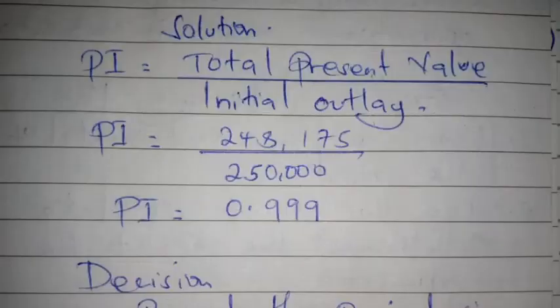Solution: Probability index equals total present value divided by initial outlay. From the question we had total present value of 248,175, then the initial outlay of 250,000. When we divide we get probability index of 0.999, which is less than 1.